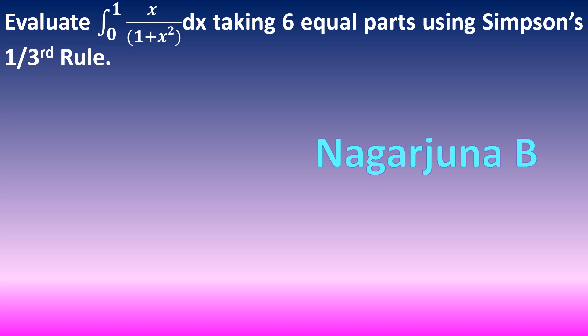Solution. Whatever function has been given, consider that as f of x. Let f of x equal to x divided by 1 plus x square. Here, n is equal to 6 because they have told us to divide the interval into 6 equal parts. The upper bound is 1 and the lower bound is 0. Therefore, a is equal to 0 and b is equal to 1, where a is the lower limit and b is the upper limit.